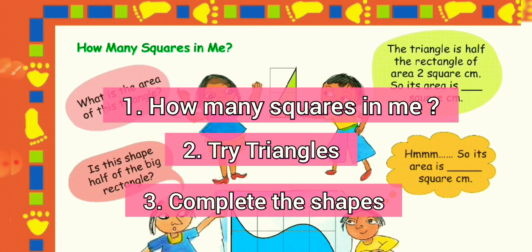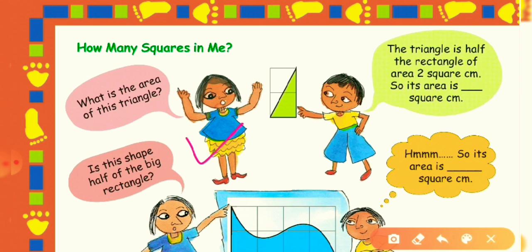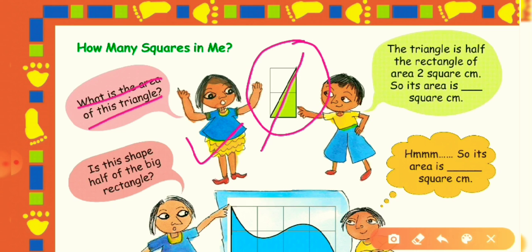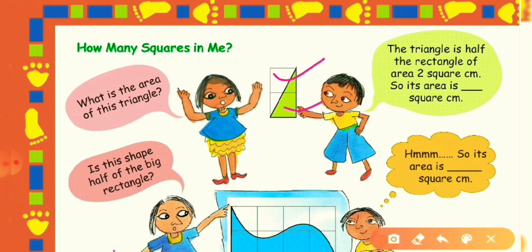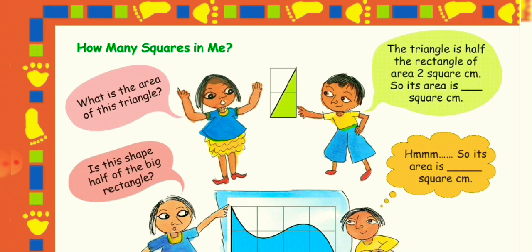Now come to the first topic, 'How Many Squares in Me.' This girl is asking: what is the area of this triangle? Here we have a whole rectangle, divided into two equal triangles. We have to find the area of the green triangle. The suggestion is that the triangle is half of the rectangle. The rectangle's area is 2 square centimeters, so the triangle's area is half of that — 1 square centimeter.